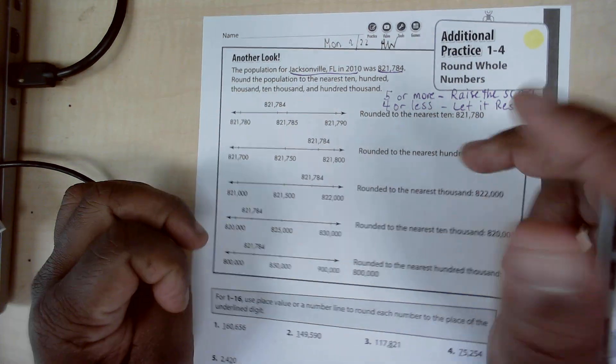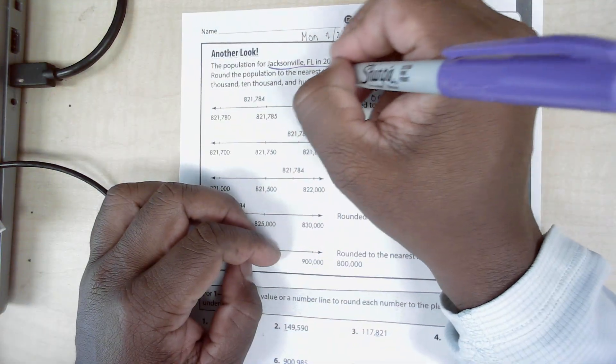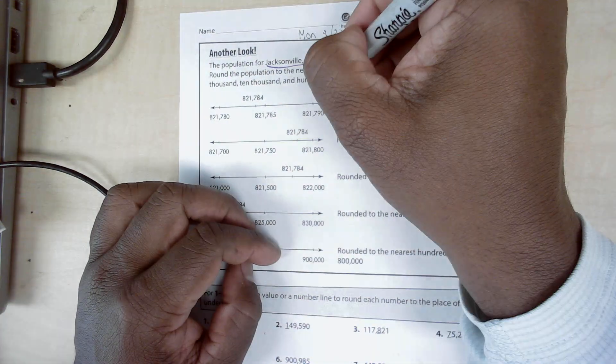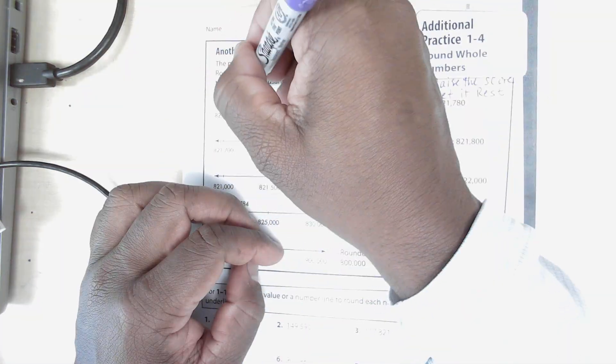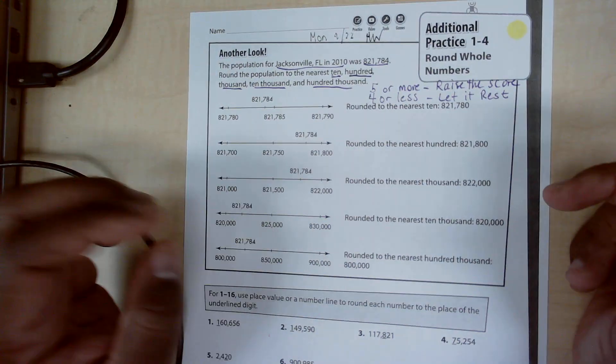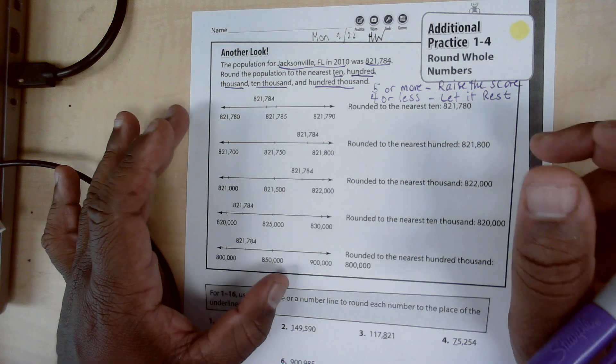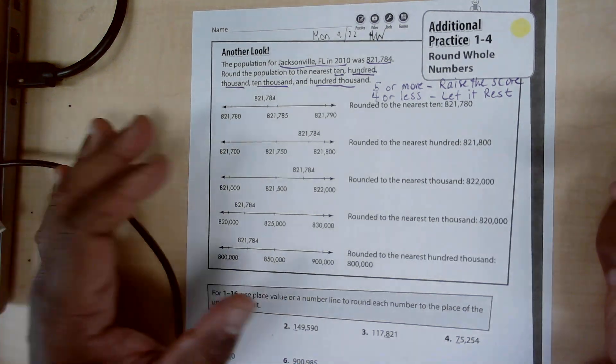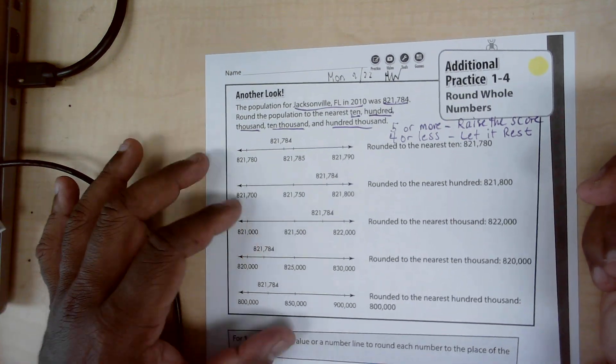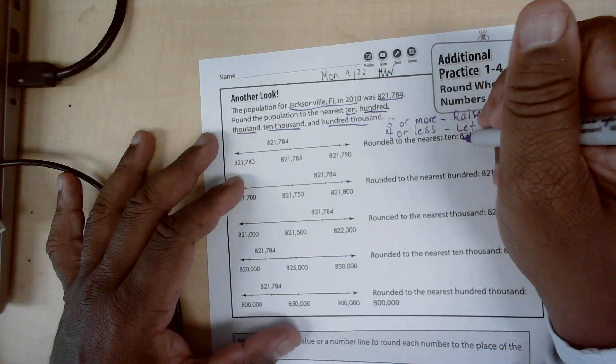To the nearest ten, hundred, thousand, ten thousand, hundred thousand, right? So whatever digit you're rounding it to is what gets underlined. So if we're rounding to the nearest ten...